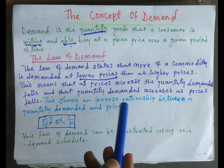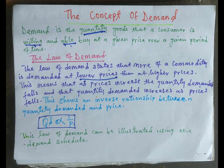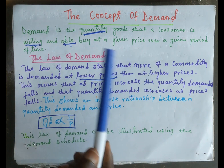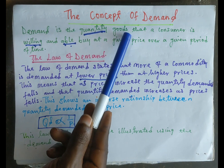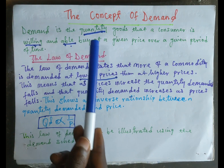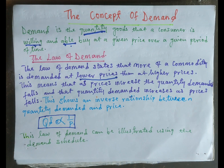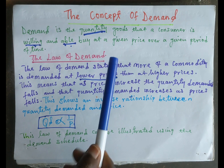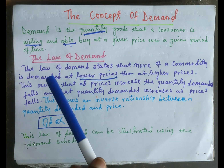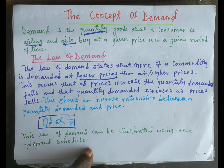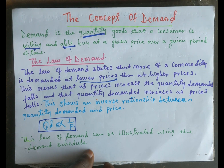We start with the definition of demand. Demand is the quantity of a good that a consumer is willing and able to buy at a given price over a given period of time. For demand to be effective, the consumer must be willing and have the ability to pay a given price over a given period of time.